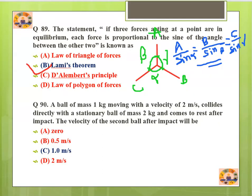Question number 90: A ball of mass 1 kg moving with velocity 2 m/s collides directly with a stationary ball of mass 2 kg and comes to rest after impact. The velocity of the second ball after impact — we apply conservation of momentum: m1*u1 plus m2*u2 equals m1*v1 plus m2*v2.